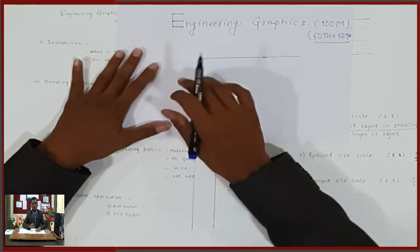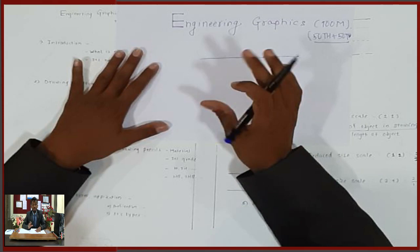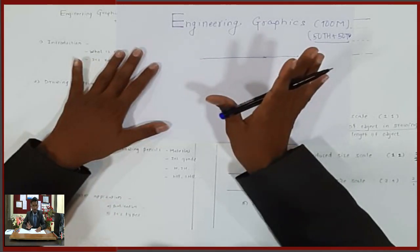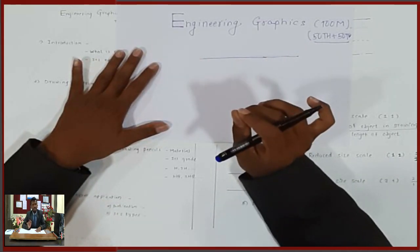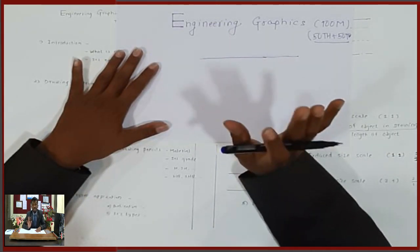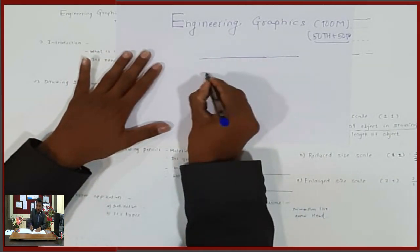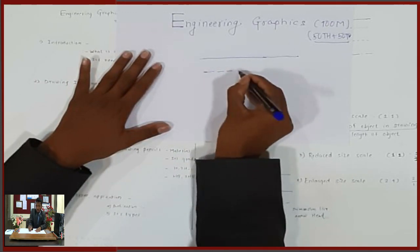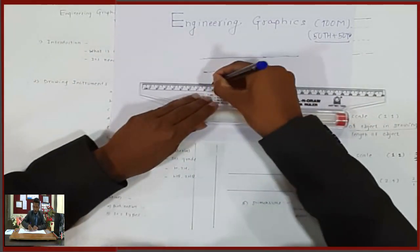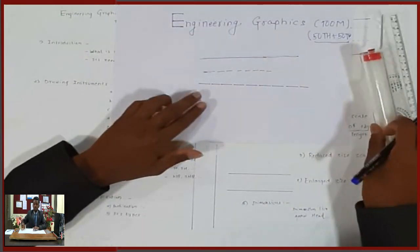The thin line is a construction line — it is a continuous thin line. The hidden line is represented by a dashed line, shown as dot-dot-dot (dashes). This dot-dash pattern is used to indicate the hidden line.